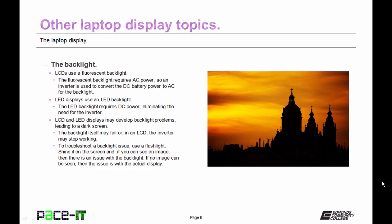We're going to begin by talking about the backlight. LCDs use a fluorescent backlight. The fluorescent backlight requires AC power from a DC system, so an inverter is used to convert the DC battery power to the AC voltages required by the backlight. LED displays, on the other hand, use an LED backlight. The LED backlight requires DC power from a DC system, thus eliminating the need for an inverter.